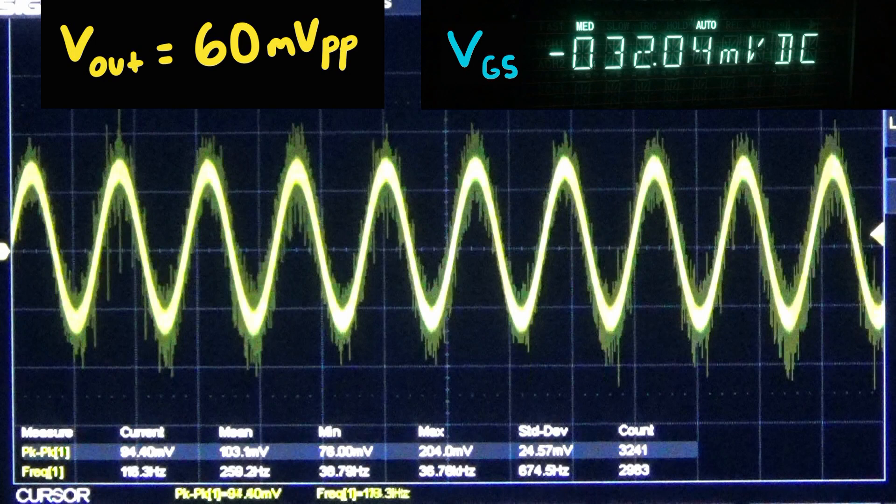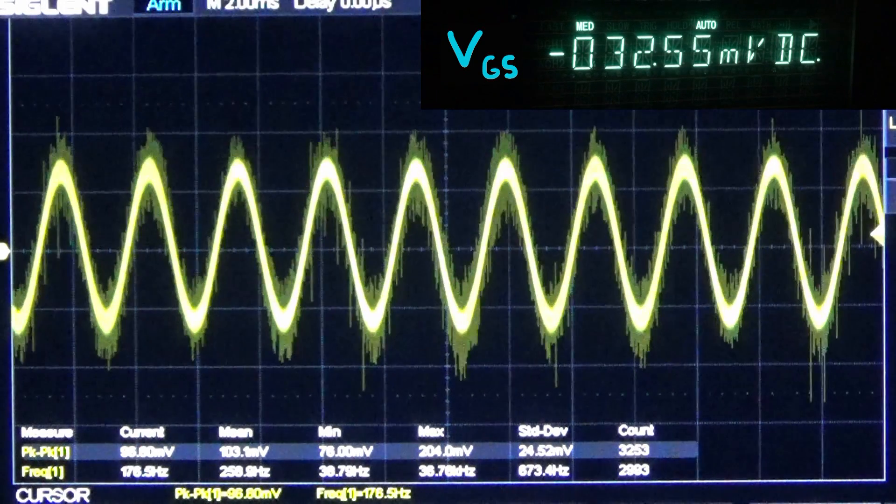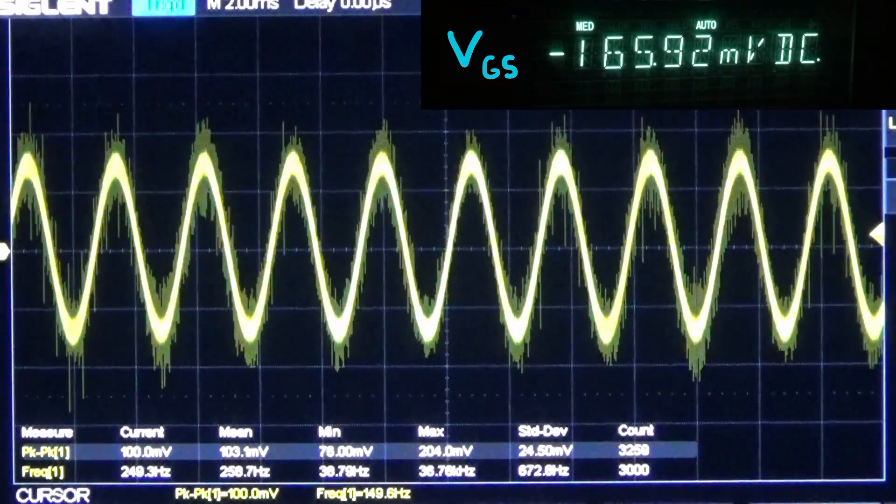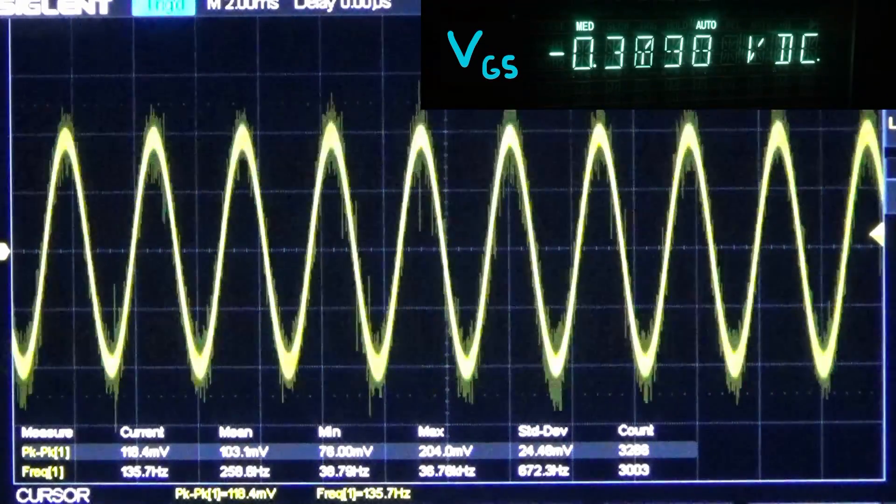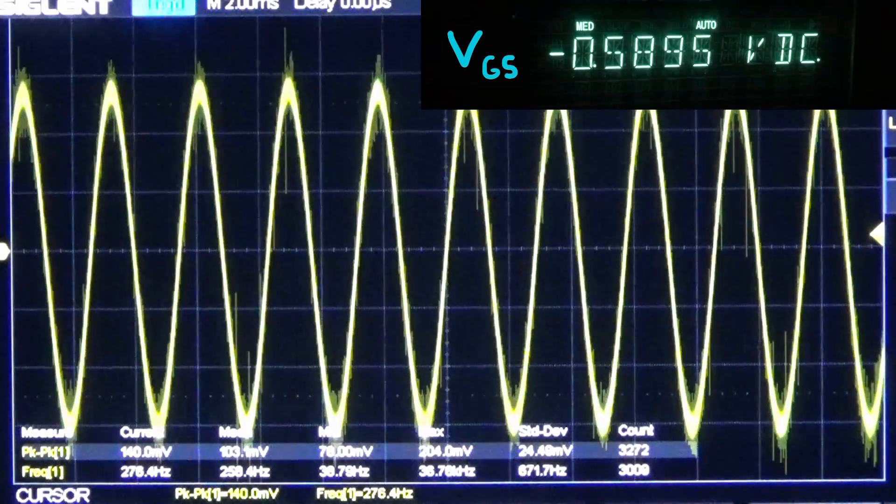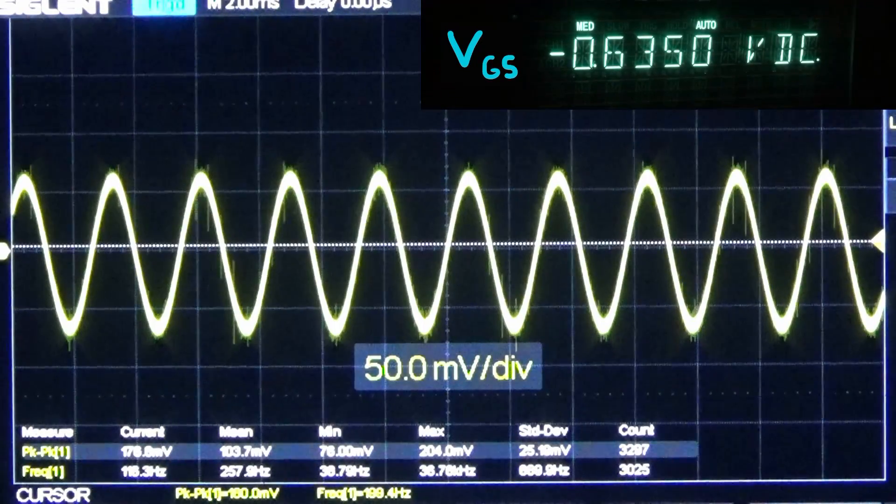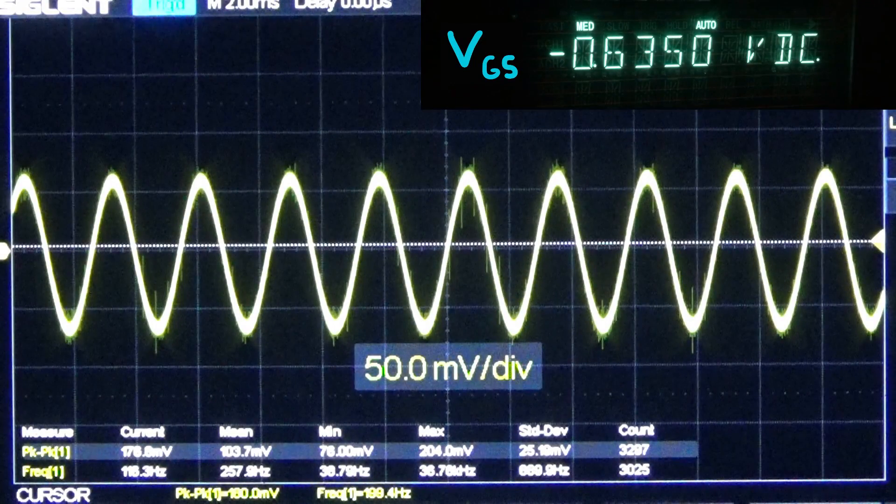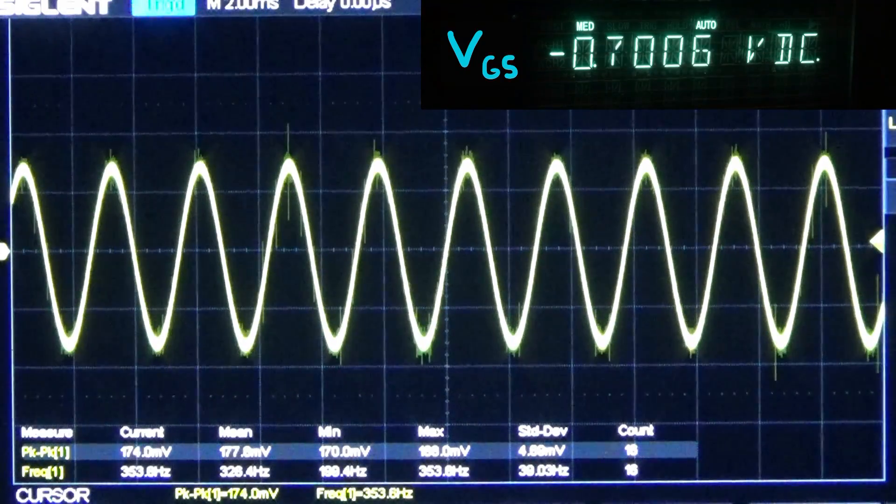So the most attenuation happens. The resistance is lowest when we have a gate to source voltage that is close to zero. As we decrease the gate to source voltage, the output amplitude begins to increase. Our resistance seen from the drain to source is increasing.